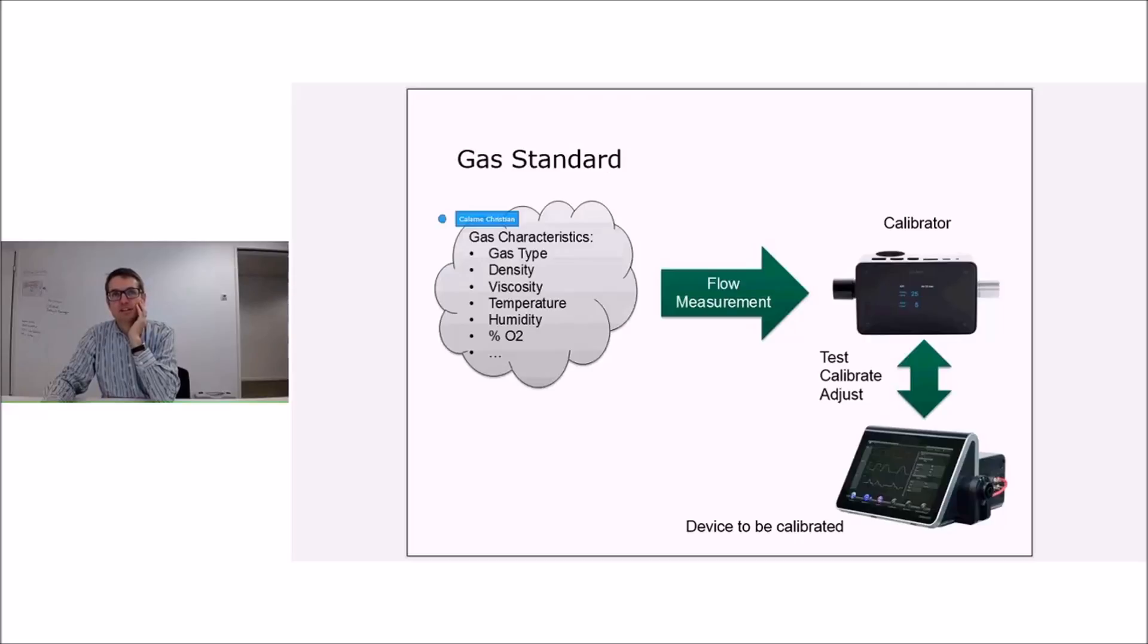The gas characteristics which we are about to measure—that's the gas we're actually measuring—has certain properties, and these properties have to be measured or dialed in in order to be compensated. So basically for the measurement you don't need the gas standard. The gas standard only tells you how the measurements are displayed, because from these gas characteristics, let's say we're measuring a very hot gas or a very humid gas, when it's measured it's calculated into standard liters or standard liters per second or into standard conditions.